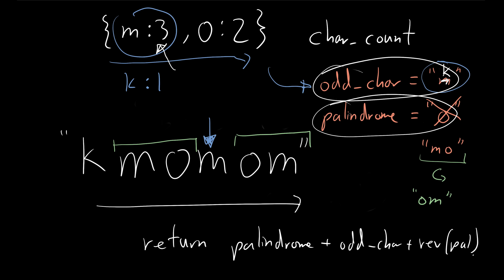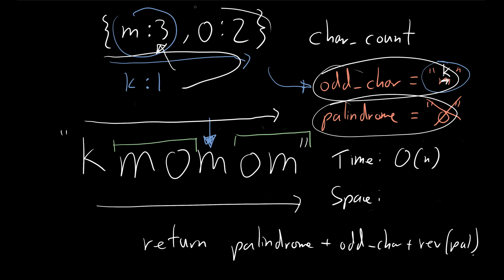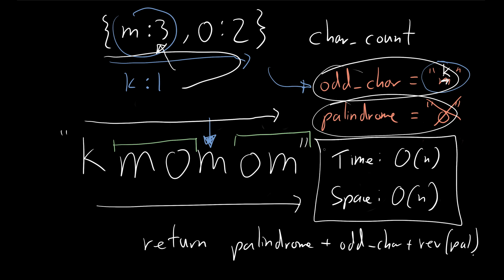Let's talk about time complexity and space complexity. The time complexity: we go through the whole string, which is O(N), and then we go through the whole dictionary, which is also O(N). So the overall time complexity is O(N). For space, we build the dictionary based on the string, and in the worst case every character is unique, so the space is also O(N).